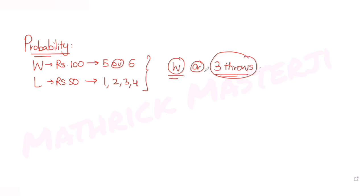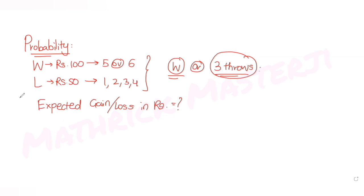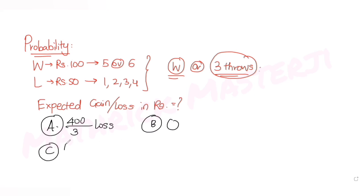So if he does not win, he can throw a maximum of three throws. If all three are losses, he also has to stop throwing the die. The question is asking how much is his expected gain or loss in rupees. The answer choices given are: 400/3 loss, zero, 400/9 rupees lost, and 400/3 rupees gained.